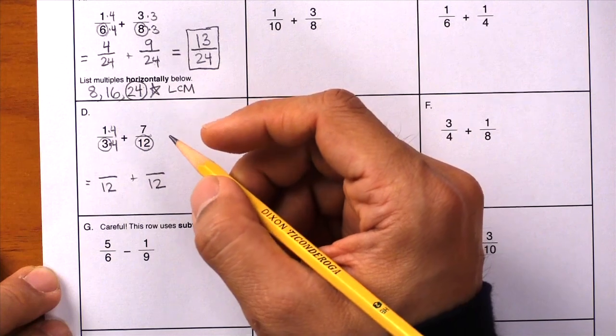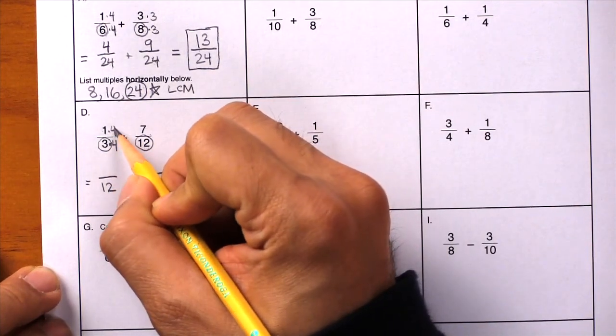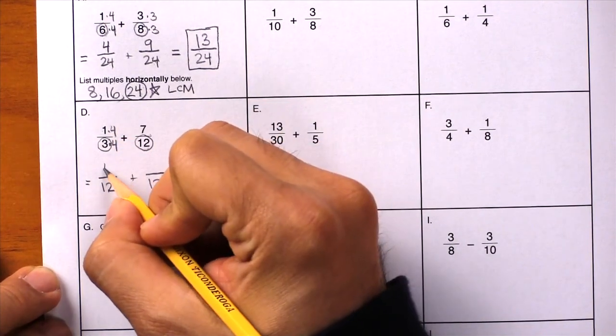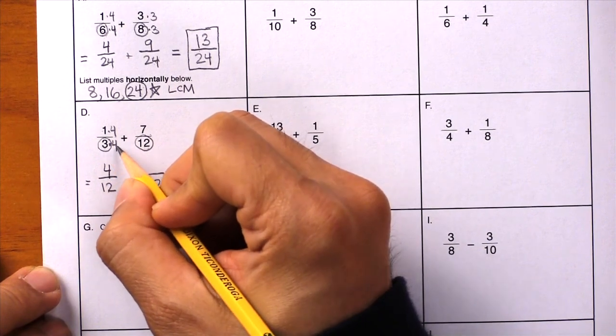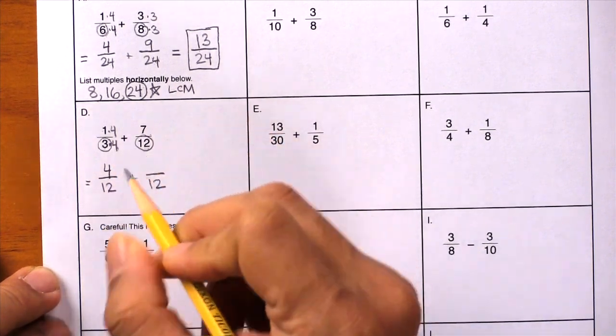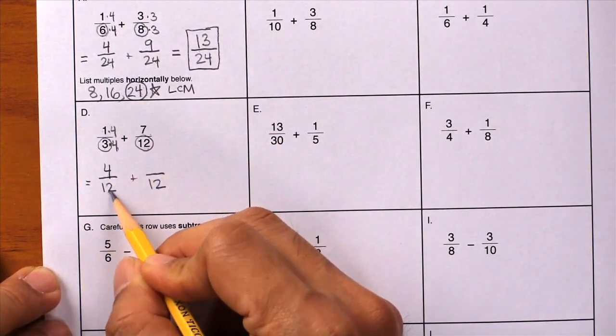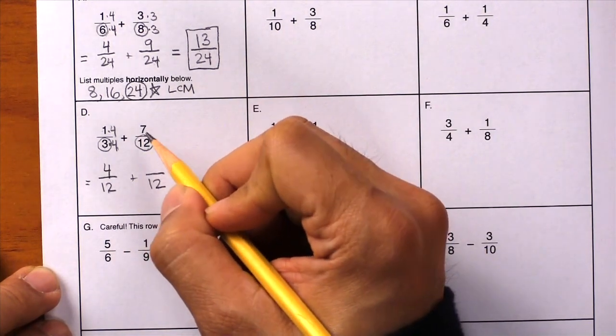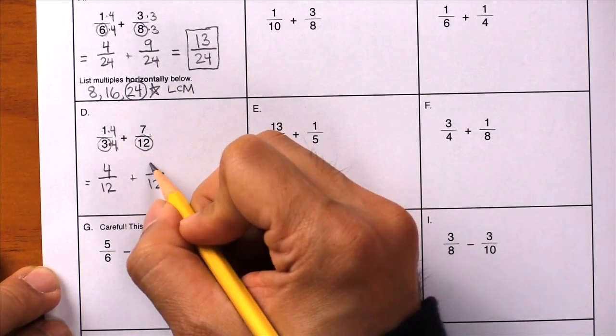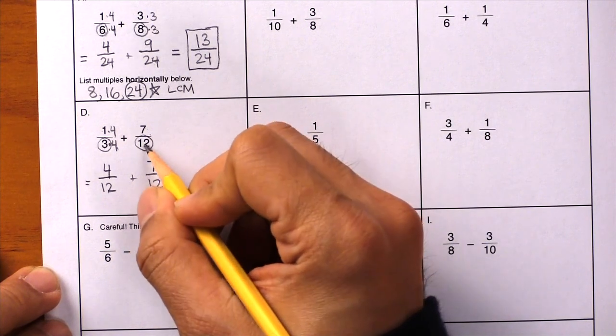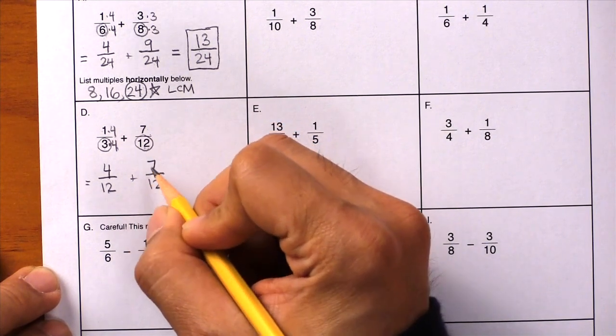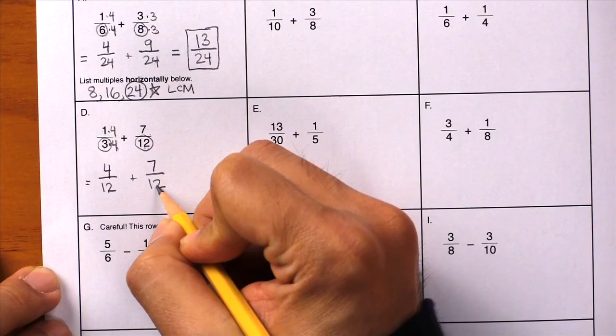Everything now is just a simple set of multiplication problems. Here we go. One times four is four. Write it down. Three times four is twelve. And you'll notice it's already there. Let's do the other side. Seven, we didn't do anything to it, so let's just write it down. And the twelve, we didn't do anything to it, and it's already there for us.